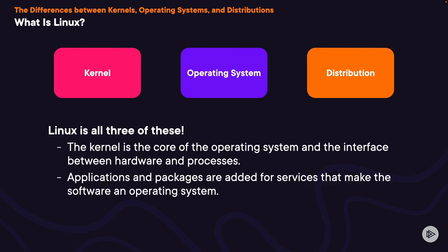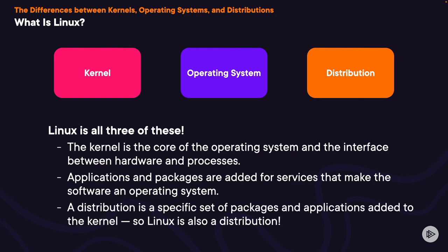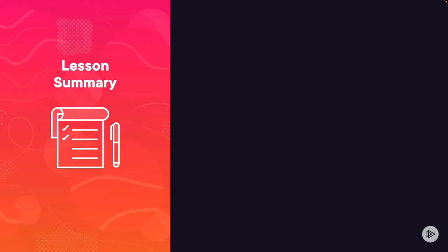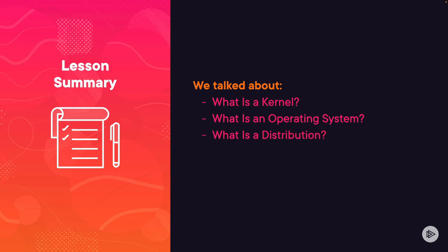First you build the kernel, then you add services and packages that make it an operating system with a user interface. Then you can add specific packages and market it as your own Linux distribution. So in this lesson, we talked about what is a kernel, what is an operating system, and what is a distribution, and how Linux is actually all three of these.